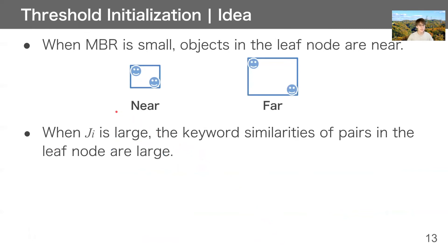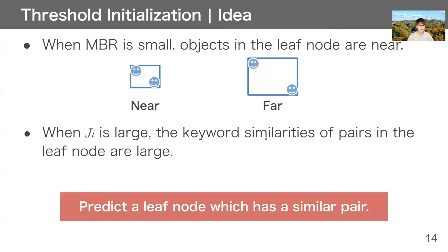Next is threshold initialization. In our observation, when MBR is small, objects in the leaf node are near. And when Ji is large, the keyword similarities of pairs in the leaf node are large. So we thought that we can predict a leaf node which has a similar pair. Our threshold initialization is based on this idea.